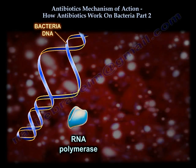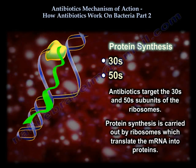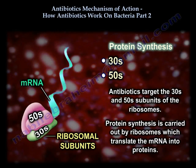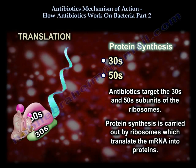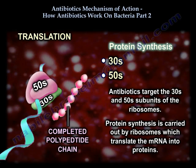For protein synthesis: the template is messenger RNA created by RNA polymerase. Antibiotics target the 30S and 50S subunits of the ribosomes, which are protein-making machines. The ribosome takes the messenger RNA and translates it into protein. The messenger RNA carries information to the ribosome's 30S and 50S subunits, where transfer RNA brings amino acids in a unique sequence to create the polypeptide chain.